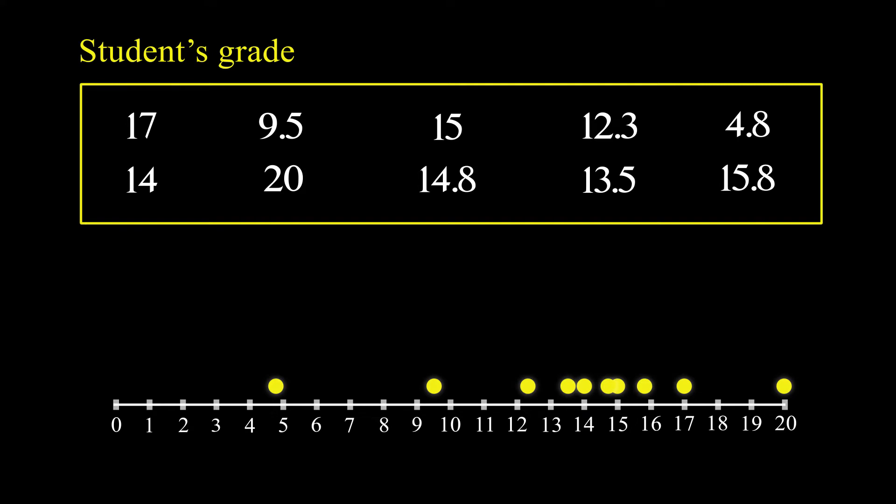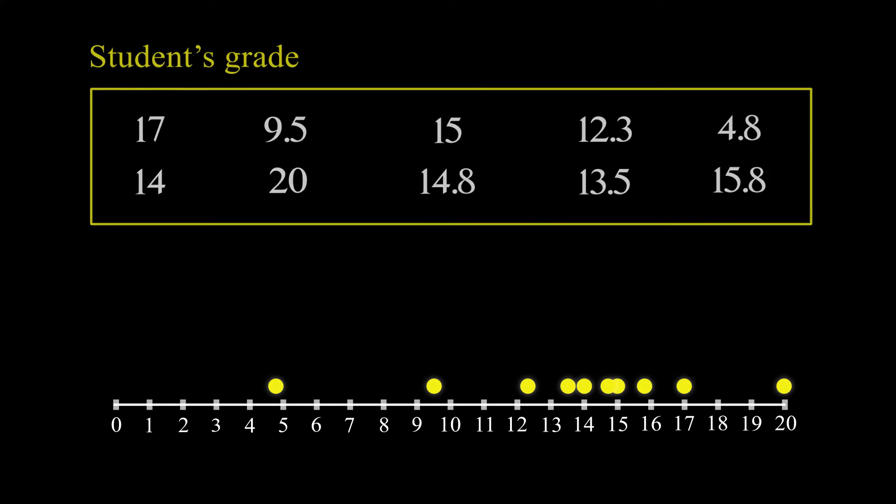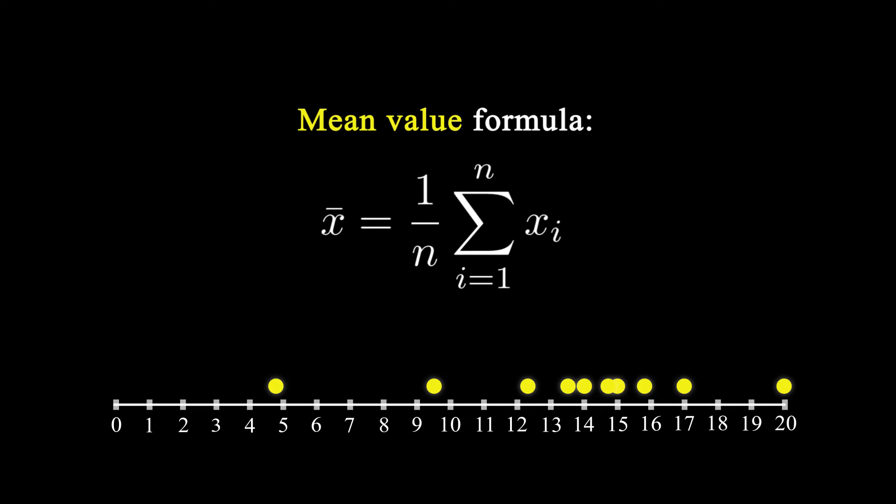Now in order to know how well the students performed, you compute the mean value of those grades. But here lies the issue. The mean itself doesn't tell you about the performance of the class, because the same average can be obtained by those two very different distributions.